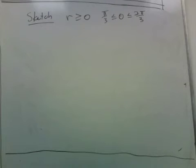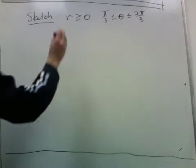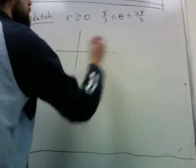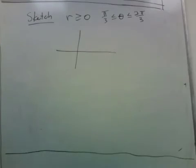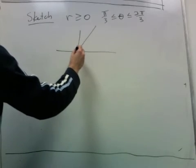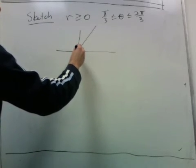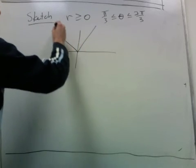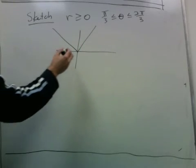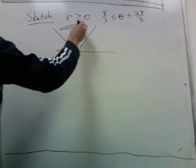Now let's try to sketch some inequalities described by polar coordinates. So here we're told r is greater than or equal to 0 and theta goes from π/3 to 2π/3. So let's get the angle right first. We're at π/3, and 2π/3 is there. And we're told the radius is positive, so we're in this range.